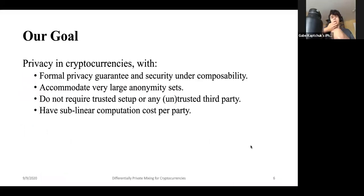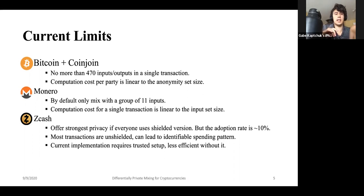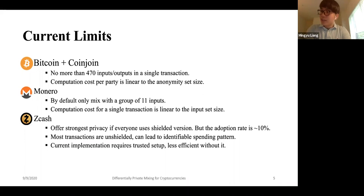Quick question: in terms of the computation cost per party in the Bitcoin CoinJoin, what's the order of magnitude — seconds, milliseconds, minutes? That's a good question. I don't know the exact answer, but I'm pretty sure it's practical since people have been using CoinJoin to mix in Bitcoin.